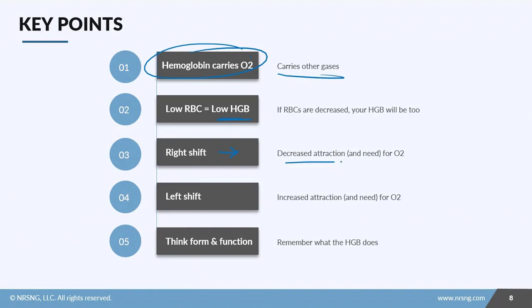If you have a right shift, you have this decreased attraction and need for oxygen, which means they're going to be less sticky—it means it's okay to give it away. If you have a left shift, it says more sticky, means a higher attraction—I want to hang on to this O2, it's my oxygen. Also think about what hemoglobin does. If you have a decrease in RBCs, expect that you're going to have that decrease in hemoglobin.